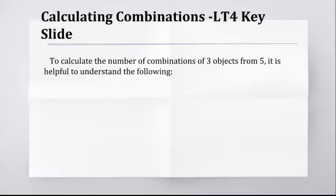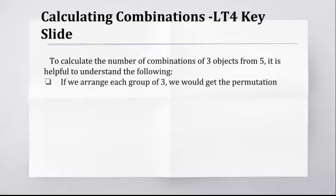If we arrange each group of three, we get the permutation. Five times four times three is sixty. For each group of three, there are 3! ways to arrange them. So if you imagine that you had a group of three people and you wanted to arrange them, there's three slots for the first one, two slots for the second one, one slot for the third one. So if you had a group of just three people, there's 3! ways to arrange them.